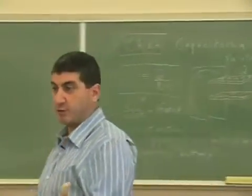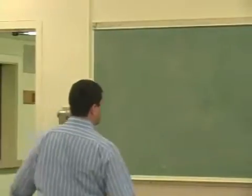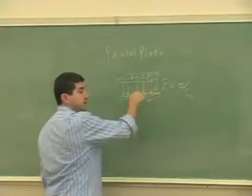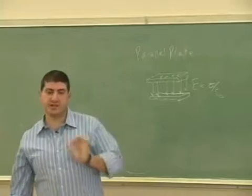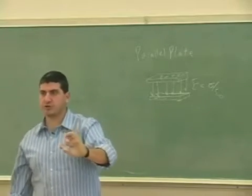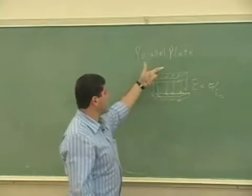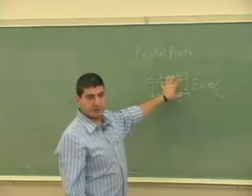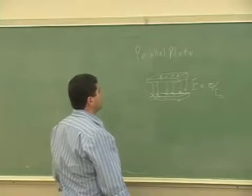The electric field is constant, and each plate creates an electric field equal to sigma over 2e0. When you add sigma over 2e0 plus sigma over 2e0 you get sigma over e0. The electric field outside is pretty much zero, so the electric field is confined to the inside.